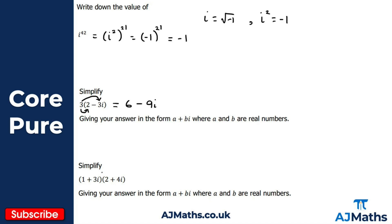For the final example we've got two brackets, so we're expanding double brackets. The process is the same as with regular double brackets — we just need to handle complex numbers. I'm going to expand using FOIL, but any method that expands double brackets is fine. So: one times two is two; one times four i gives four i; three i times two gives six i; and three i times four i gives twelve i squared.